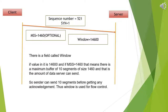Now let's see how a connection is made between a client and a server. The client will send a sequence number — let's say 521 — to the server and also set the SYN flag equal to 1. The SYN flag is for synchronization; if this flag is set, it means the sequence number is the first initial sequence number. There is an optional field MSS (maximum segment size) of 1460, and a window of 14600. If you divide the window by MSS you get 10 segments — that is how much data the server can send before getting any acknowledgement. Thus the window is used for flow control.